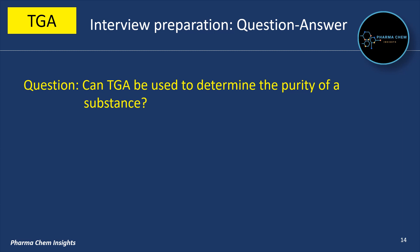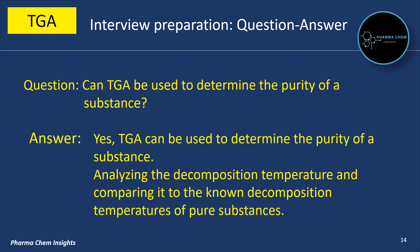Can TGA be used to determine the purity of a substance? Yes, TGA can be used to determine the purity of a substance. This can be done by analyzing the decomposition temperature and comparing it to the known decomposition temperatures of pure substances.